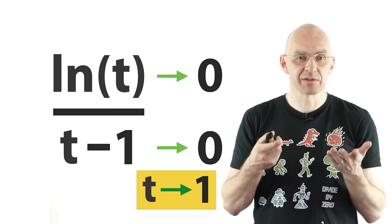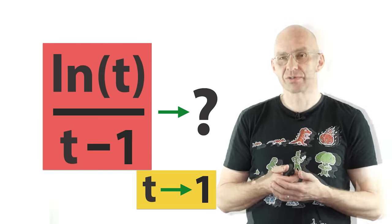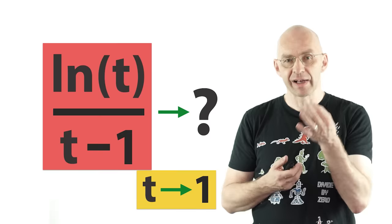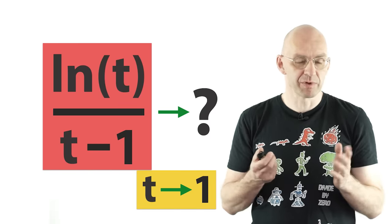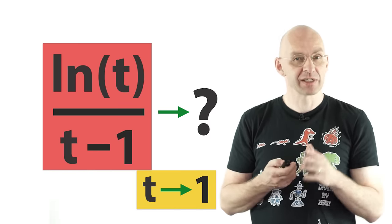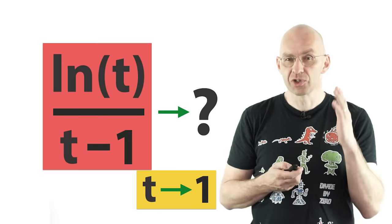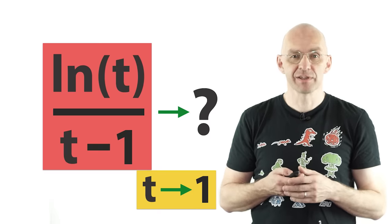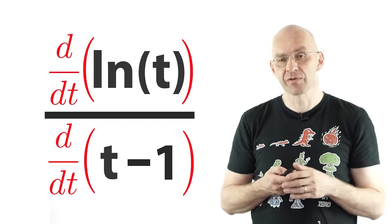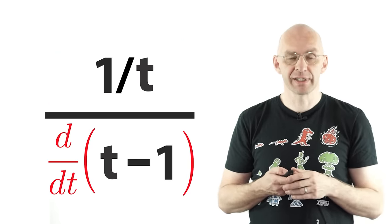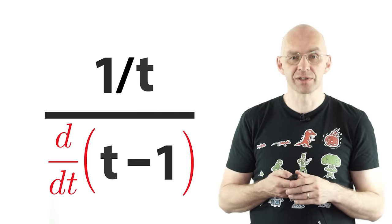And now how would you actually figure out where the whole expression goes to? We could try and evaluate this at t's that are very close to one. That's a perfectly fine strategy, but there's actually a really nice shortcut. So what you do is you take the top and find the derivative and you take the bottom and find the derivative. So the derivative of the top is 1 over t and the derivative of the bottom is just 1.